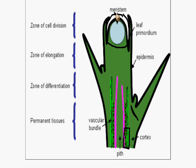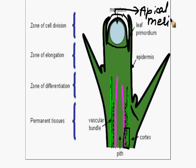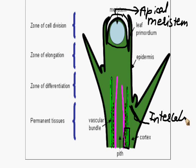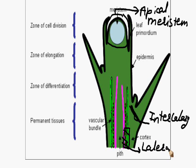The first meristem, which is present at the top of the plant body, we call the apical meristem. This meristem is responsible for the growth and development of the plant body. The second one, which is present at the base of the branches and leaves, we call the intercalary meristem. This intercalary meristem is responsible for the branches and leaves. The third meristem, responsible for the lateral growth of the plant body, is known as the lateral meristem.